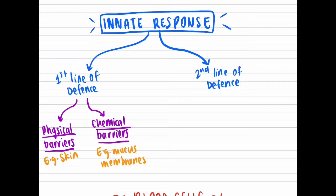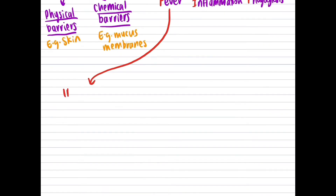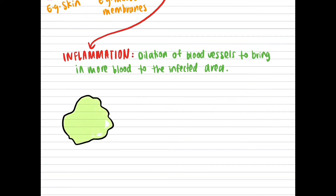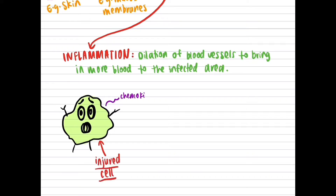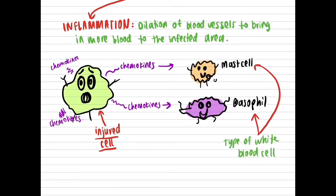Once this happens, the second line of defense is activated. This is also part of the innate response and is non-specific, meaning it targets anything foreign and is present from birth. The second line of defense includes FIP: F for fever, I for inflammation, and P for phagocytosis. Inflammation is the dilation of blood vessels to bring more blood to the infected area. This begins when an injured cell releases chemokines that alert other white blood cells, including basophils and mast cells, which release histamine and prostaglandin.